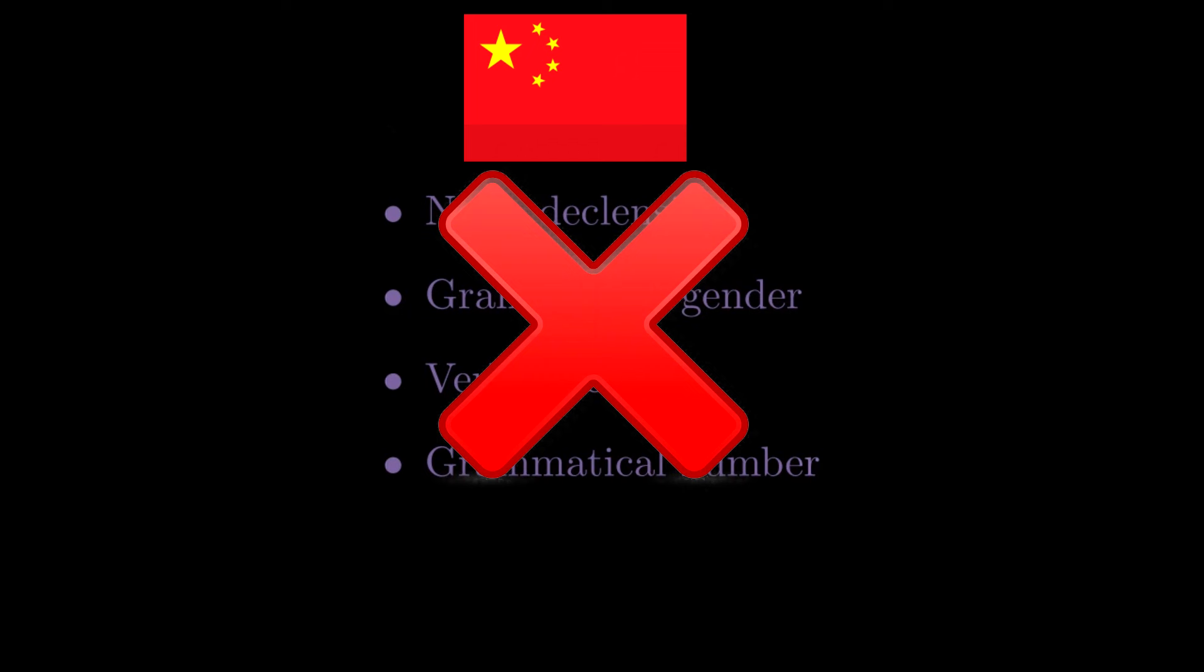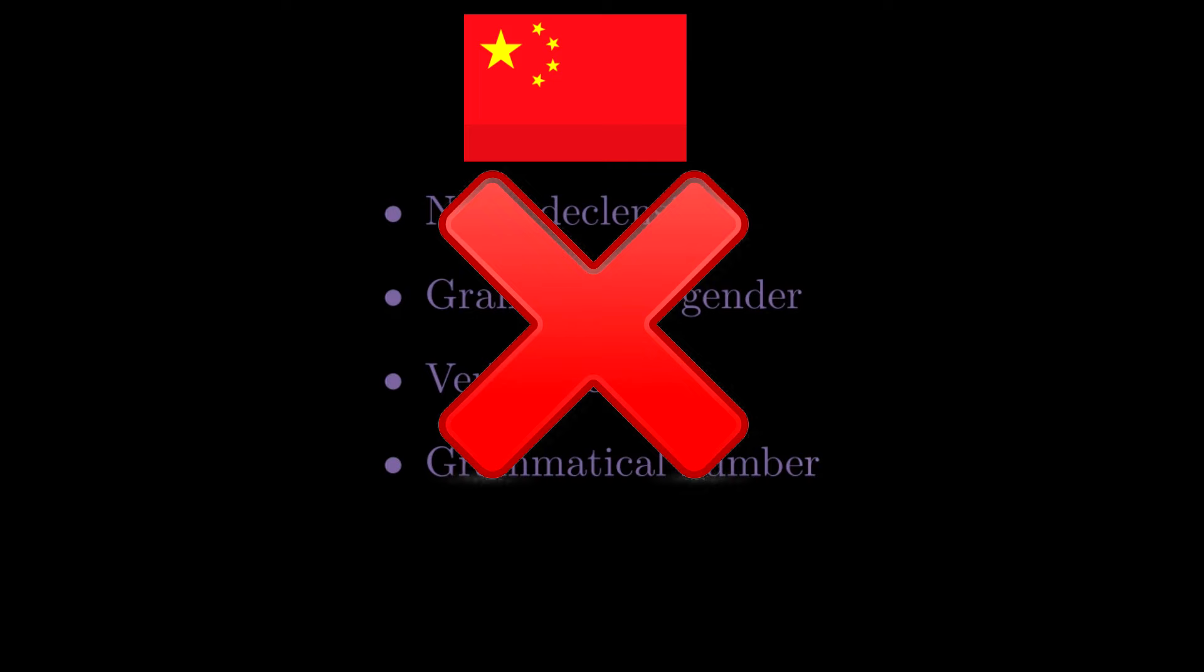As Peano noted in his work, there are languages such as Mandarin Chinese where grammatical number, noun declensions, grammatical gender, and verb inflection are not present, yet Mandarin is an alive language that over one billion people can speak and comprehend without problems. Another such example is Indonesian.